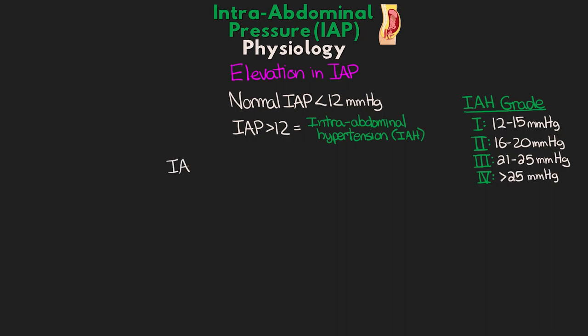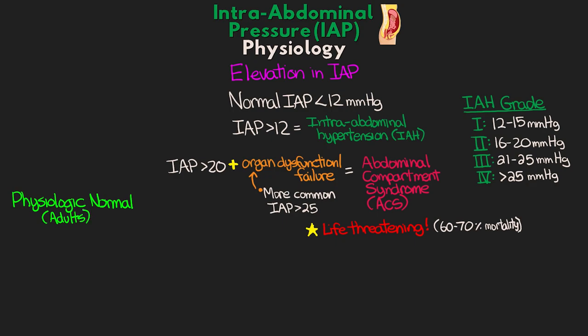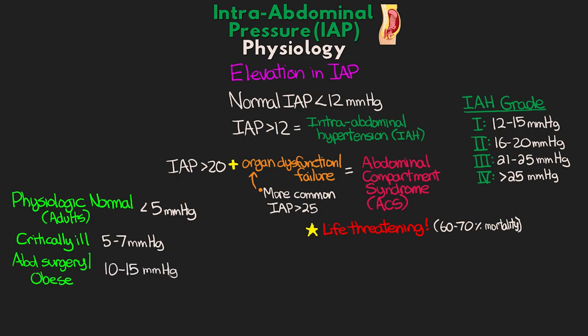When our patient's pressure is greater than 20 and there is pressure-induced organ dysfunction or failure, it's considered abdominal compartment syndrome, or ACS. This organ dysfunction is much more common when pressures are greater than 25. This is a life-threatening situation believed to have as high as 60 to 70% mortality. Physiological normal in adults is actually less than 5, and it's normal for the critically ill to see numbers from 5 to 7. Post-abdominal surgery or obese patients may see 10 to 15.